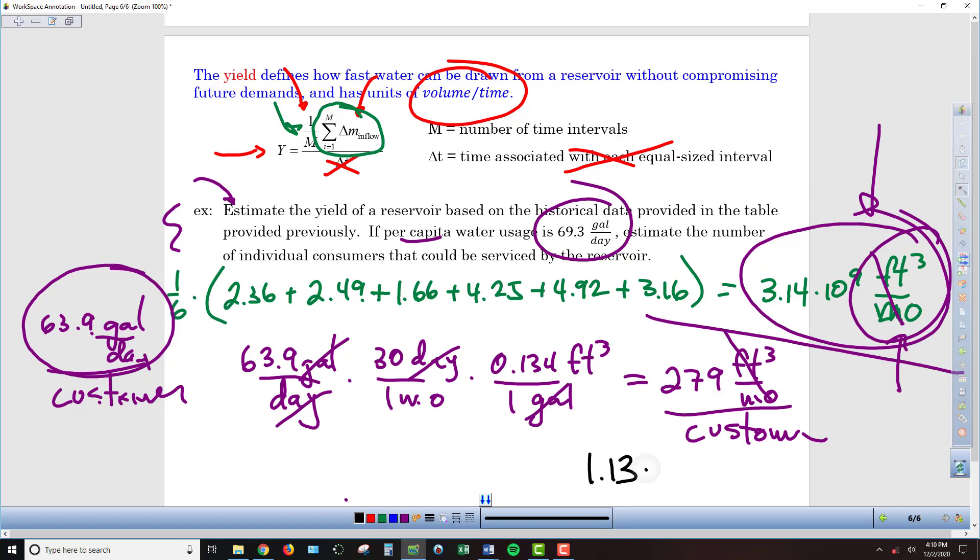Which is 1.3 times 10 to the 7th customers. Or in a number that, let's make sure that looks like customers, in a more relevant term, we can say that's 11,300,000 people that can be supported by this reservoir. That's a big reservoir.